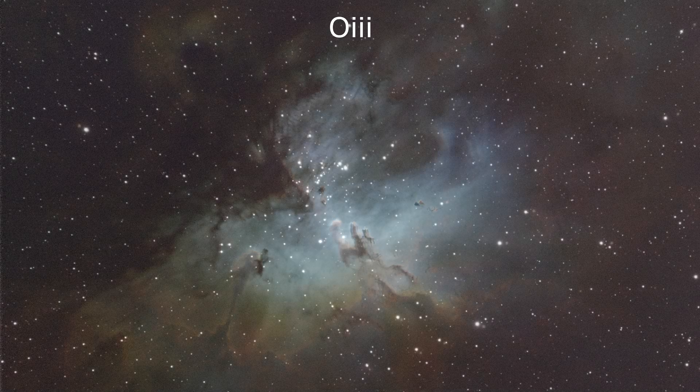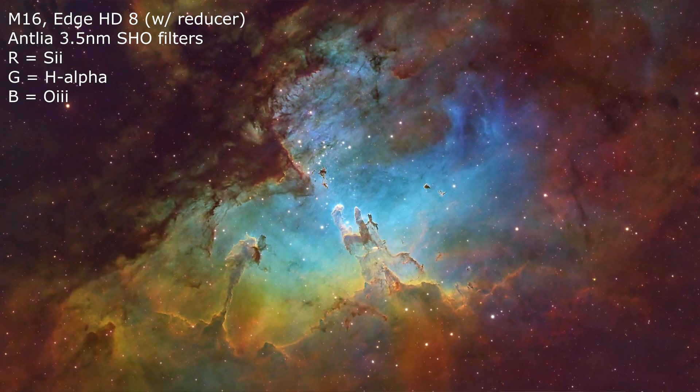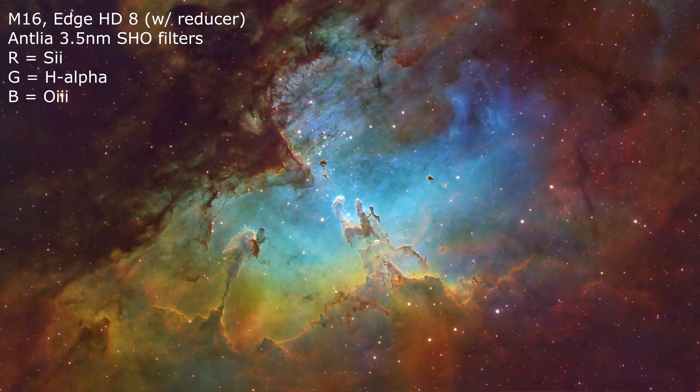So the S stands for ionized sulfur, H is hydrogen alpha, and O is ionized oxygen. They are each assigned to an individual R, G, or B channel to create a colorful image. And they can be mixed and matched using pixel math, for example. So now if you were thinking about going mono and investing in filters, I highly recommend you purchase a narrow bandwidth filter set, especially if you are in Bortle 7 or higher.